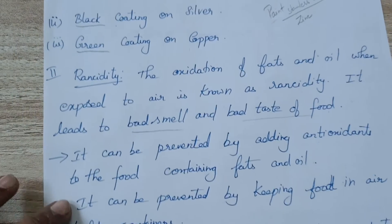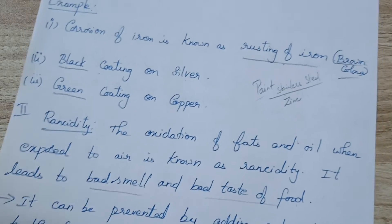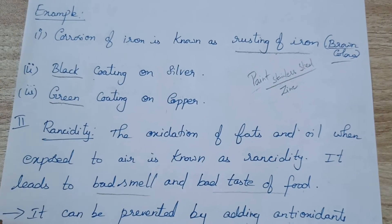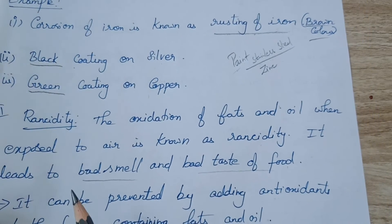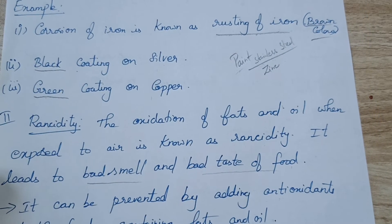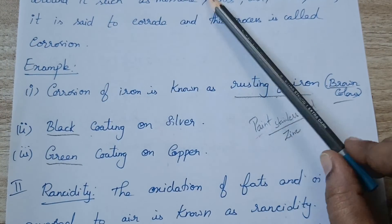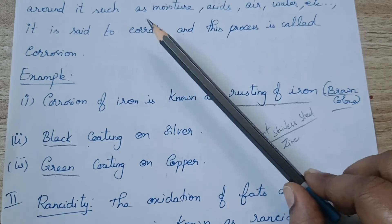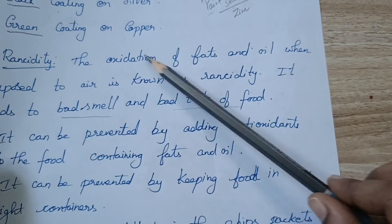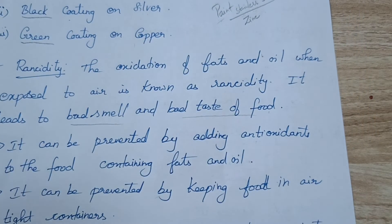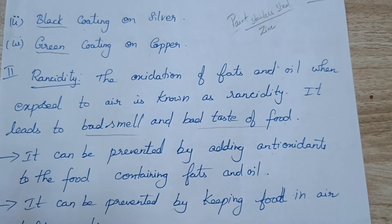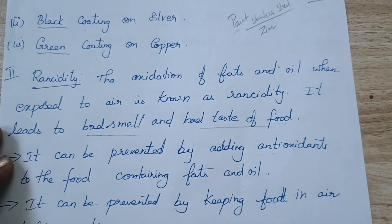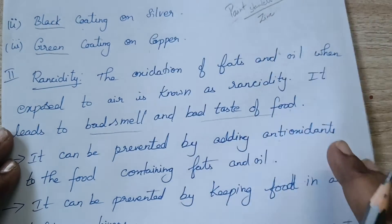So these are the two effects of oxidation we have seen in our day-to-day life: corrosion and rancidity. Corrosion deals with the metals and rancidity deals with the fats and oils — you can see fungus formation on foods, and that is because of rancidity, which is the oxidation of fats and oil in the food.